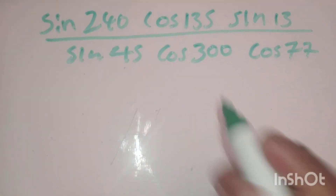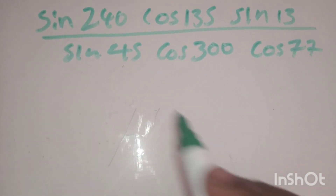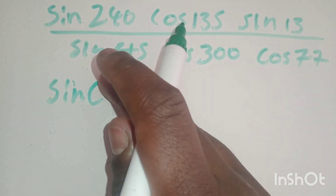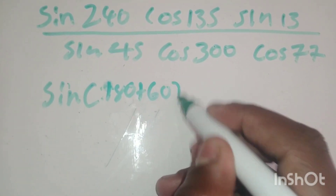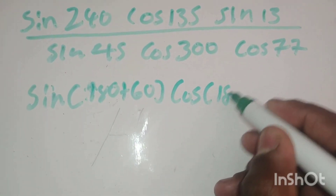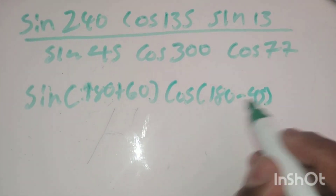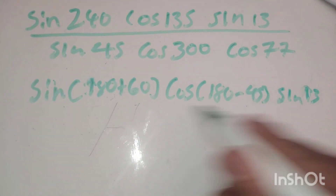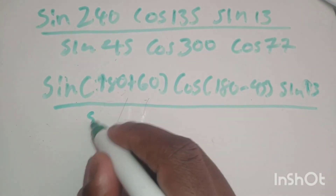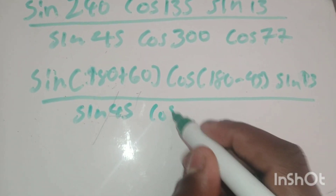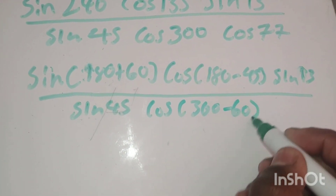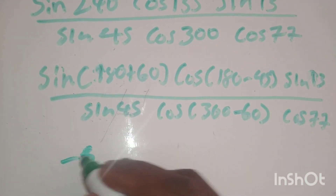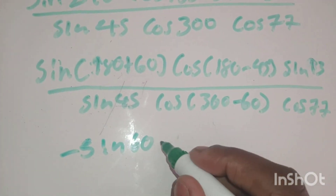Now let's apply this to a more complex problem we have to solve without a calculator. 240 degrees is in the third quadrant — it's the same as 180 plus 60. Cos(135) is in the second quadrant, so it's 180 minus 45. Then sine 13 remains as is — it's not a special angle so we'll use co-ratios. Cos(300) is in the fourth quadrant, the same as 360 minus 60. In the third quadrant, sin is negative, so we get negative sin(60). In the second quadrant, cos is negative, so we get negative cos(45).